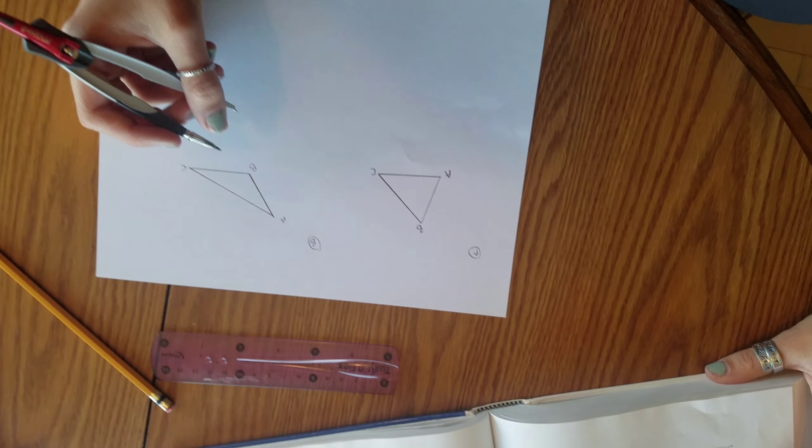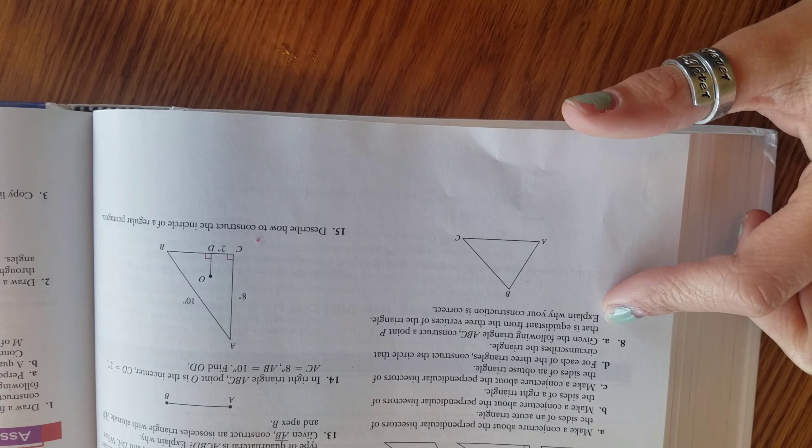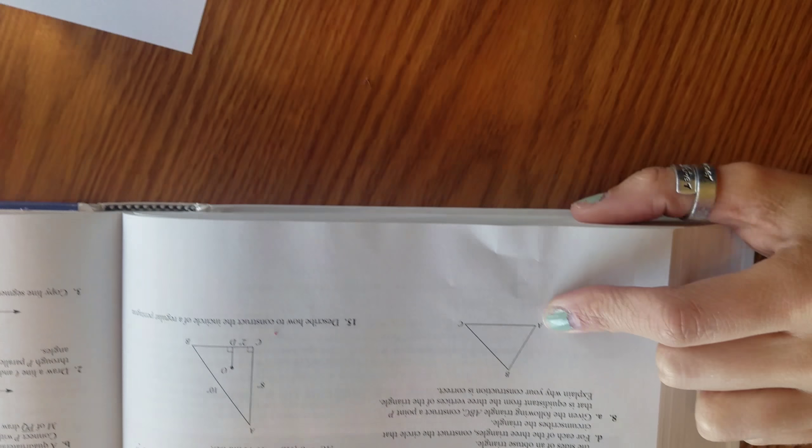Part A states, given the following triangle A, B, C, construct a point P that is equidistant from the three vertices, which is A, B, and C, of the triangle. Explain why your construction is correct.